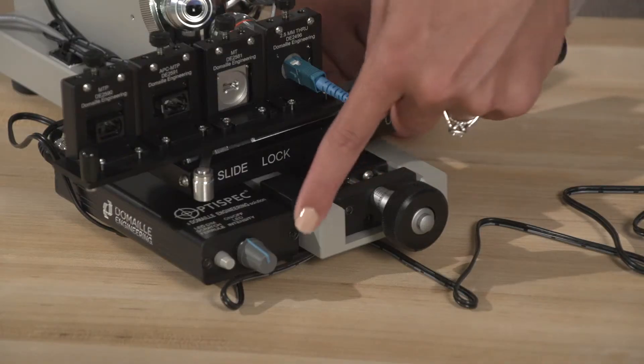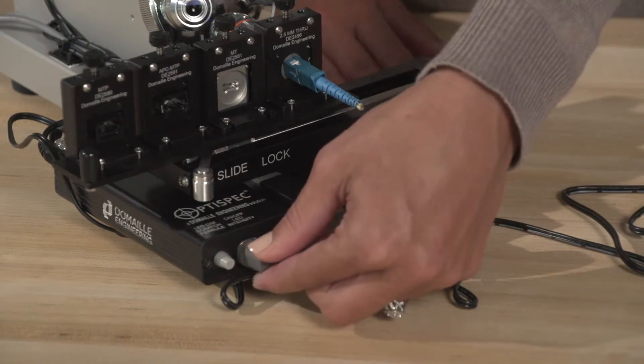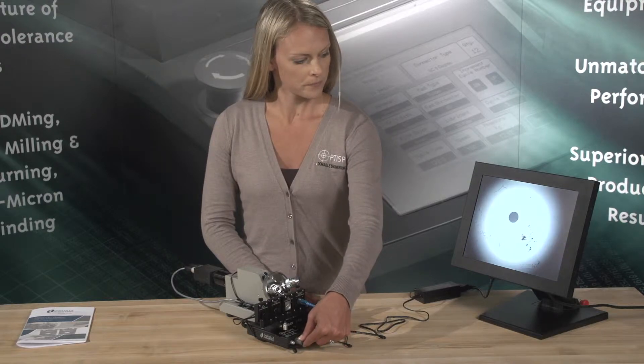The illumination can be controlled using the intensity control knob located on the ME12013 LED controller. This allows the operator to control the brightness of the image.